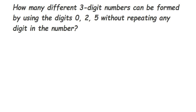The question is: how many different three-digit numbers can be formed by using the digits 0, 2, and 5, without repeating any digits? So we should not use 2 or 5 more than once. We have to form three-digit numbers. The given numbers are 0, 2, and 5.